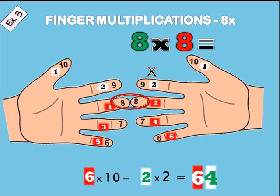Example three: eight times eight. The middle fingers are the 8 and 8, so put them together and count from the meeting fingers: 1, 2, 3, 4, 5, 6 — that means 6 times 10 is 60. Then 2 times 2 is 4, so we have 64.